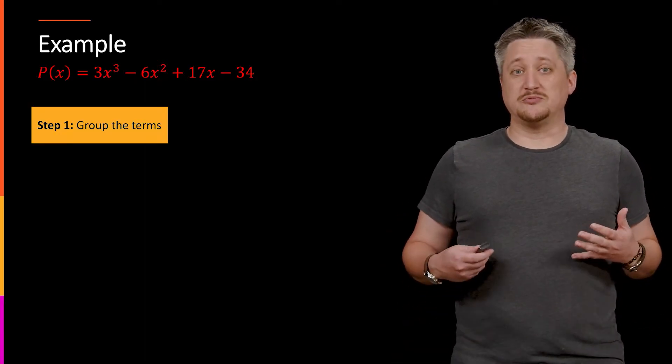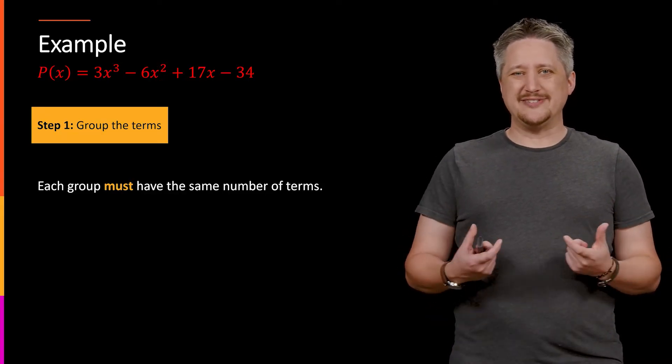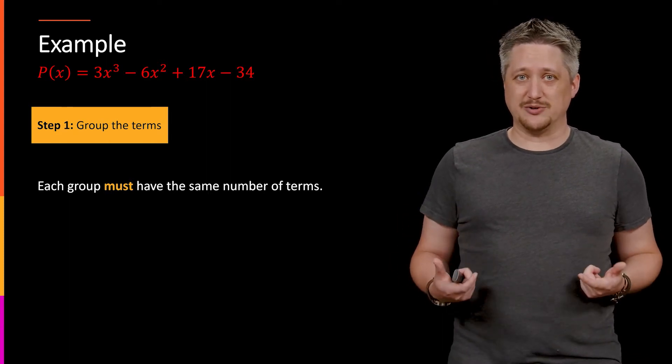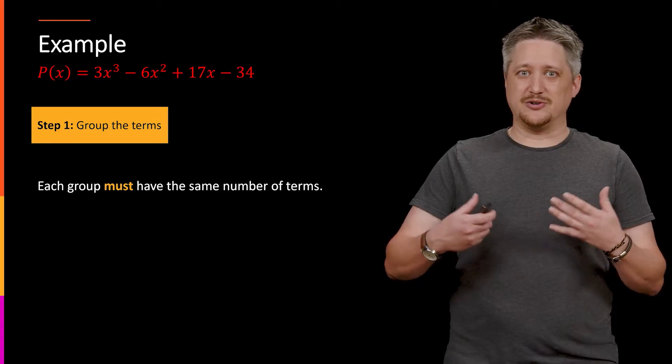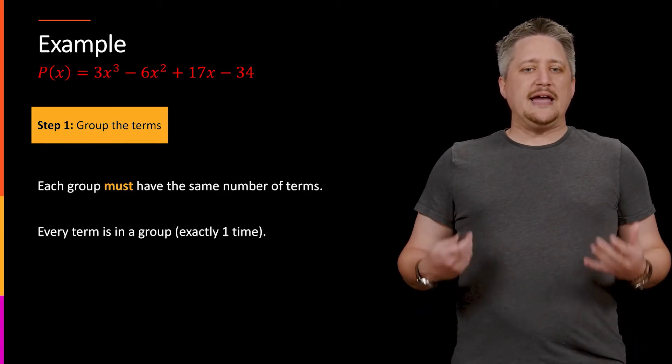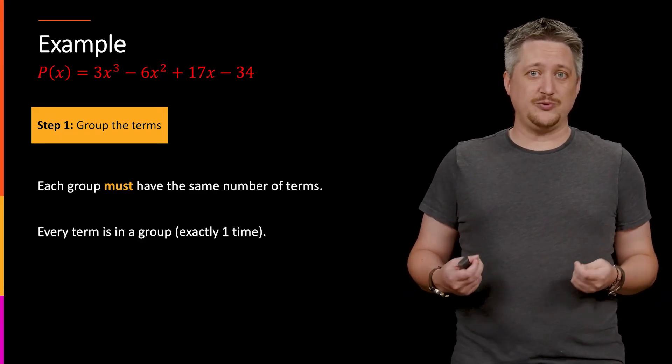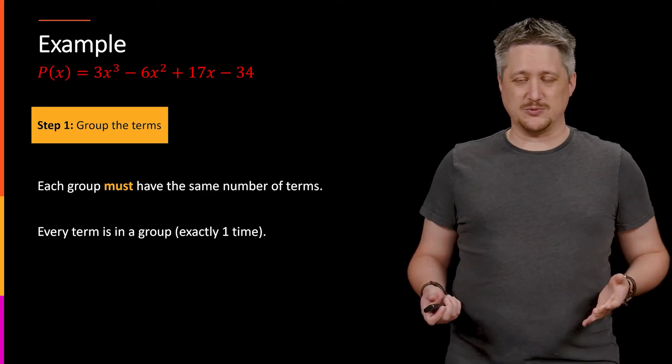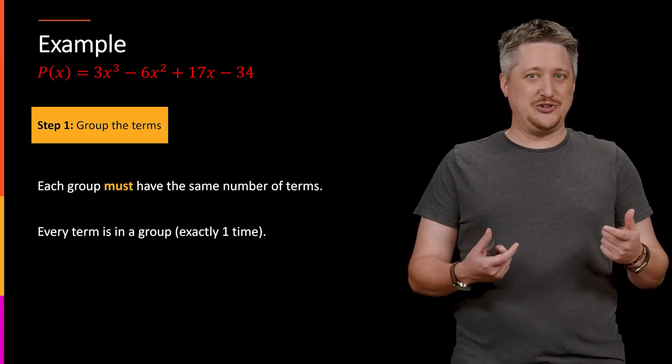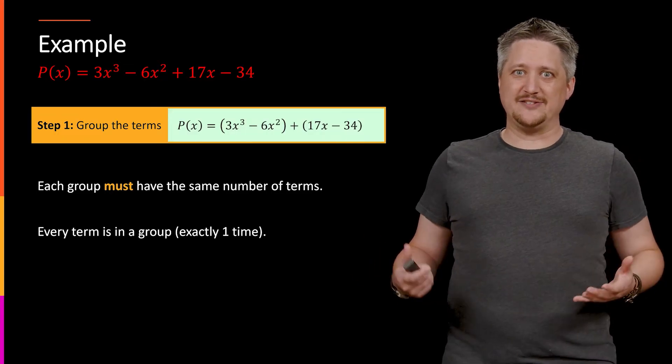Step one, we want to group the terms. Each group must have the same number of terms. We're basically separating these terms into different pieces. If you have four terms, you can do two groups of two, for example. Each term in the original polynomial has to be in a group. You can't just group some stuff and leave stuff out. This is why doing something with five terms is difficult because you can't do two, two, and have one sitting alone. You have to break it up into even sized pieces.